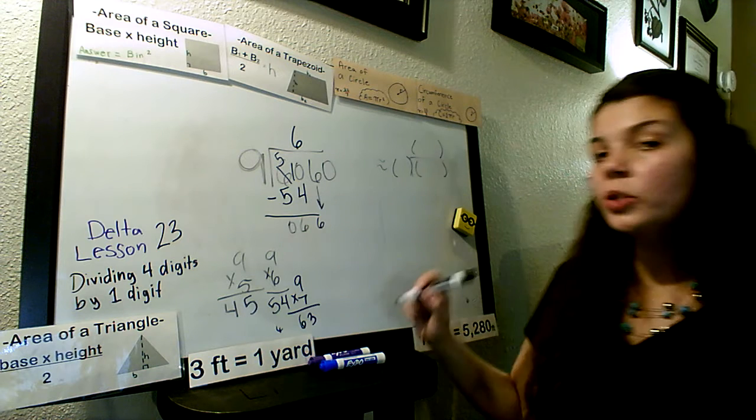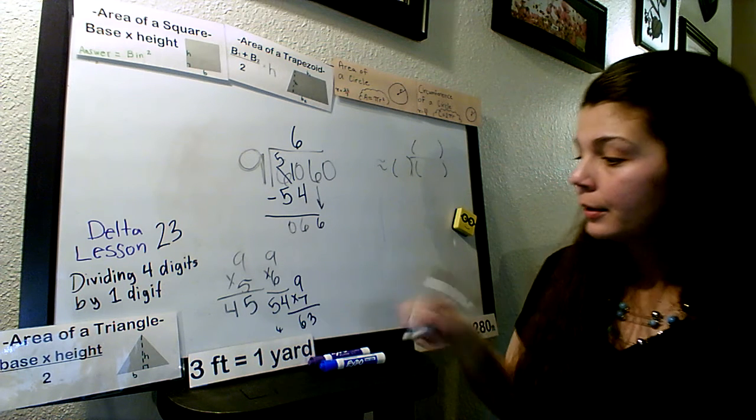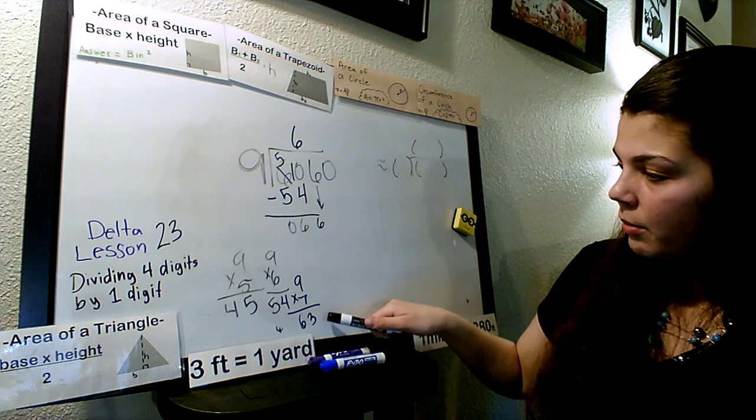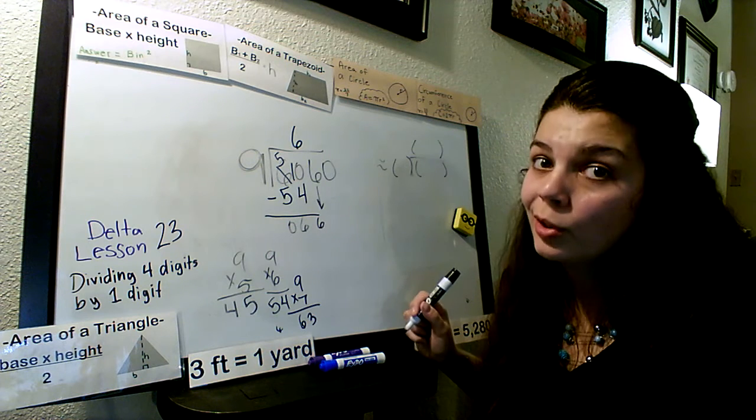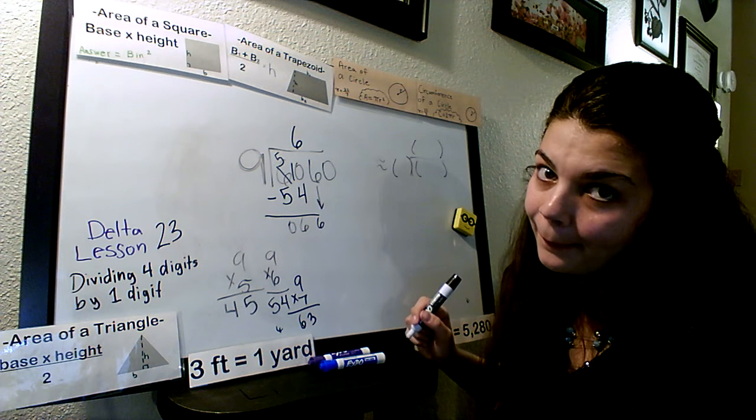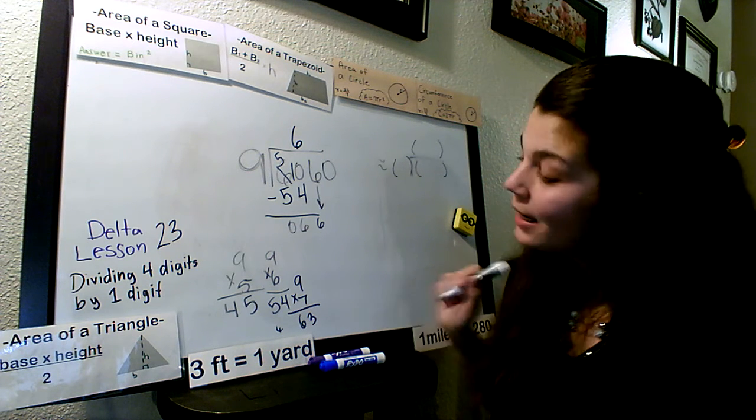5 minus 5 is 0. We drop our 6 down. How many 9s go into 66 without going over? We look here at what we spitballed. 63. Do you think we can get any closer without going over? No. No, we cannot.